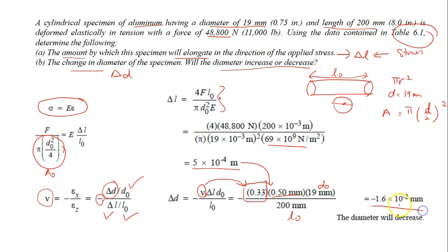Solving this, you will get this as your delta D, or the change in diameter. So in this case, you get the value negative. So what does it mean? When you get the value negative, meaning the diameter will decrease. If you get the value as positive, meaning the diameter will increase.